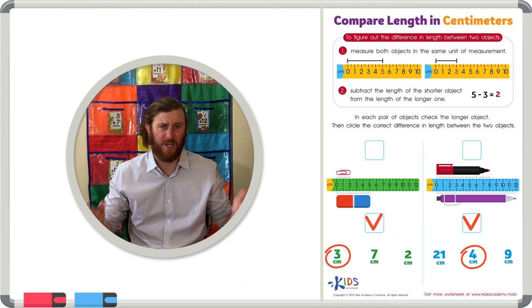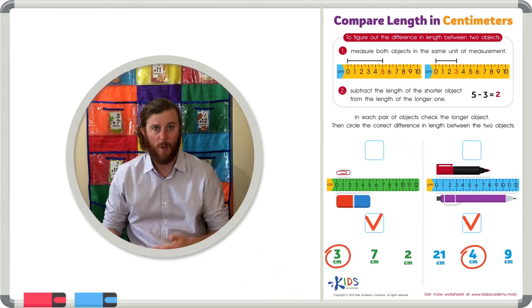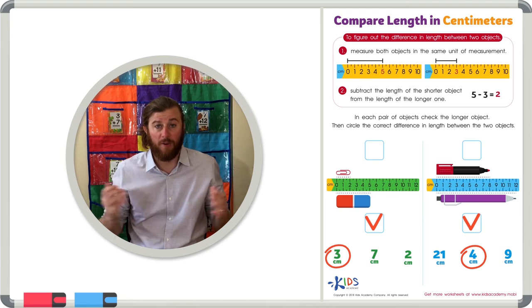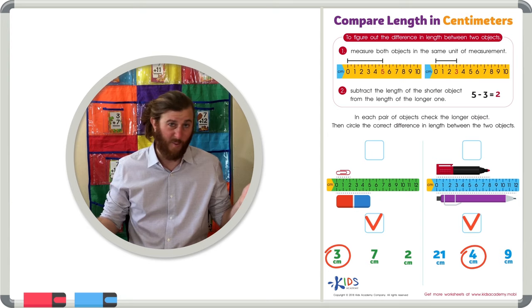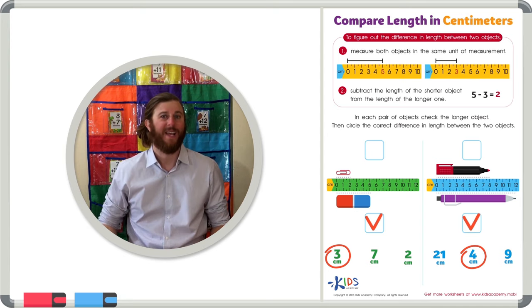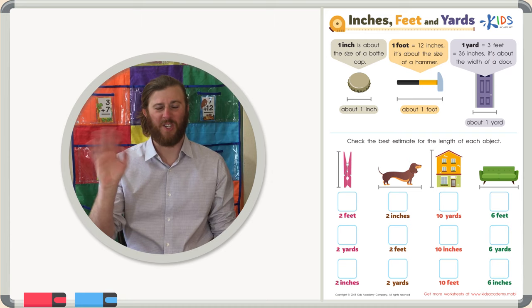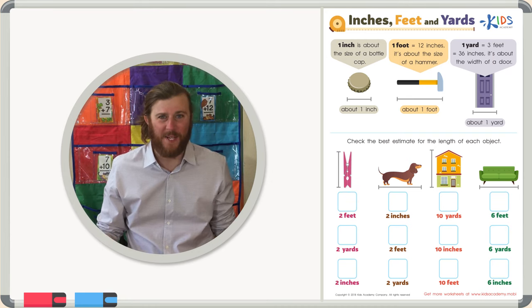Remember, boys and girls: when you want to find the difference in length between two different objects, first measure both objects, then subtract the length of the shorter object from the length of the longer object. The difference will tell you how much bigger one object is than the other. Thanks for watching, boys and girls, and we'll see you next time.